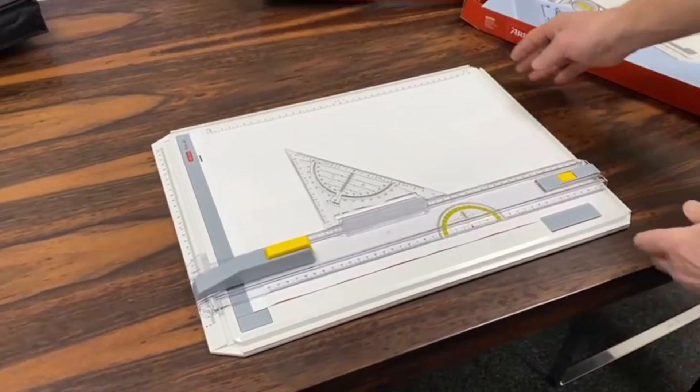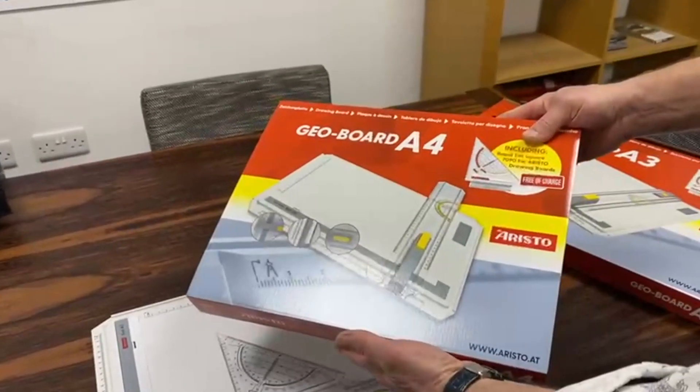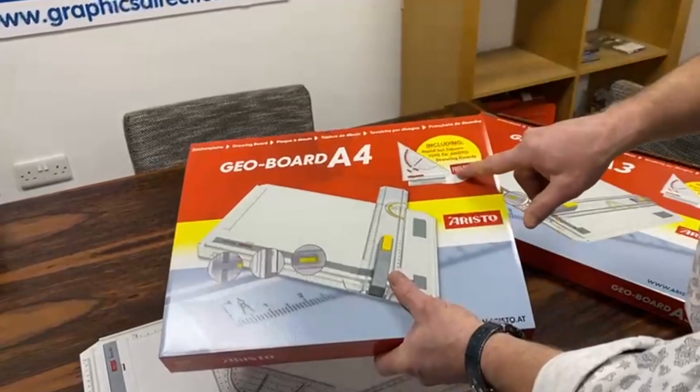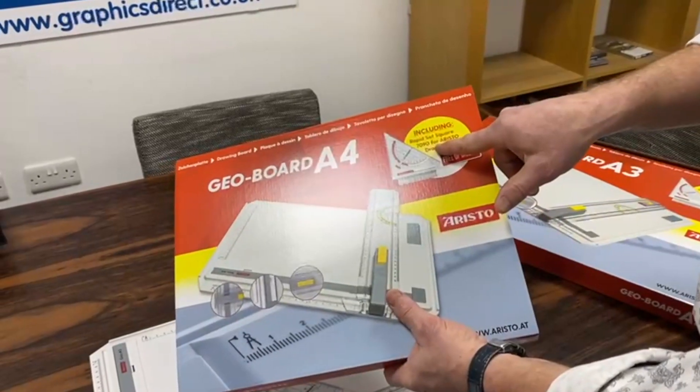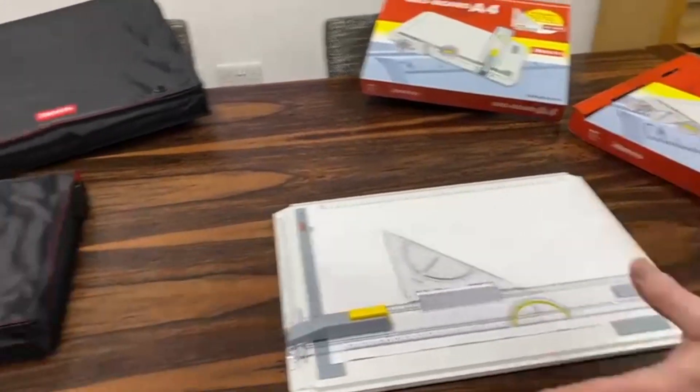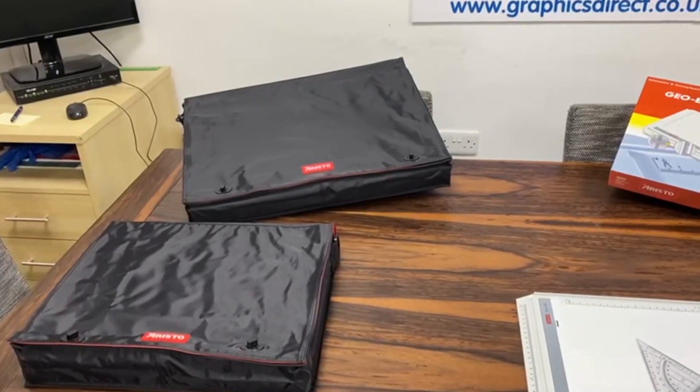All in all, a really versatile and quick drawing board. The A4 version is exactly the same, just half the size, but comes with all the same features including the free rapid set square. It's available either in its bare form in the box, or with the carrying case, and it's showerproof.